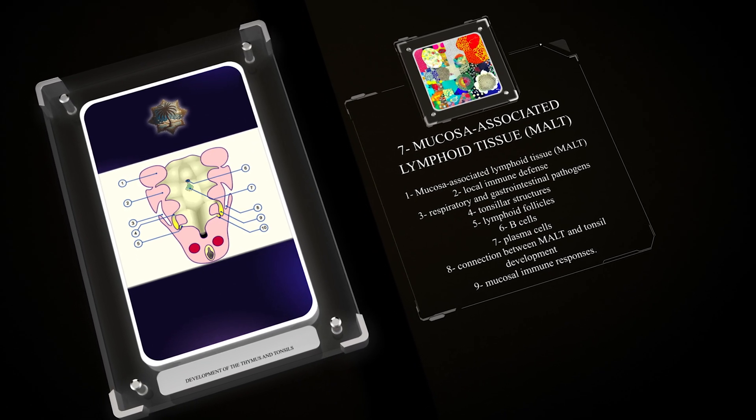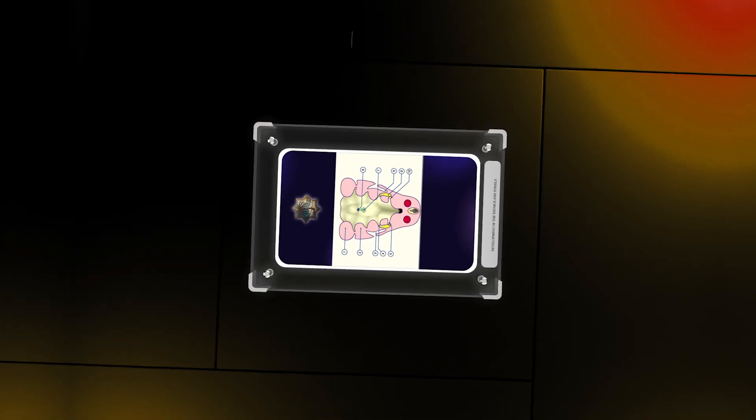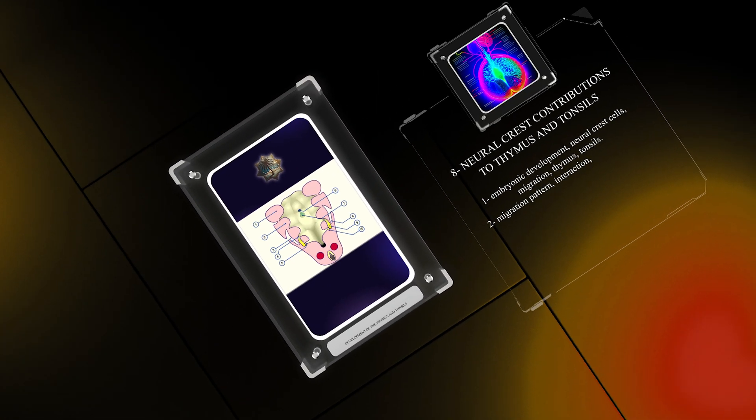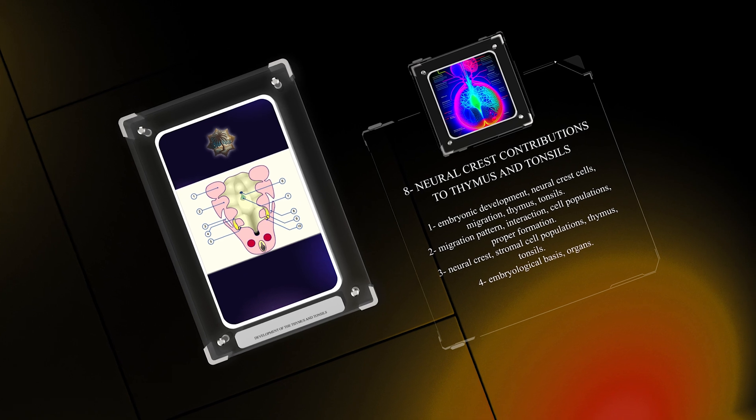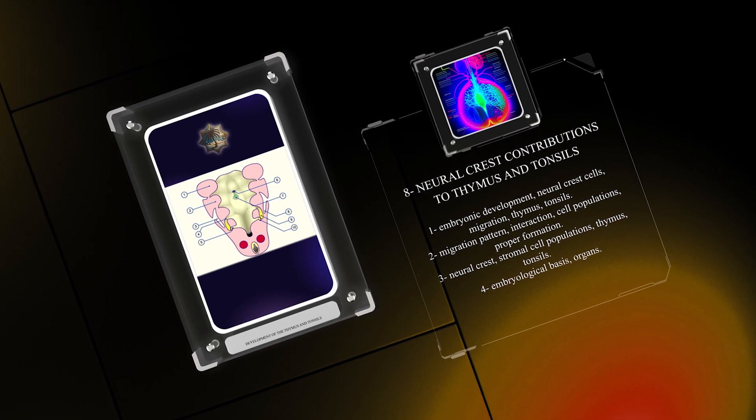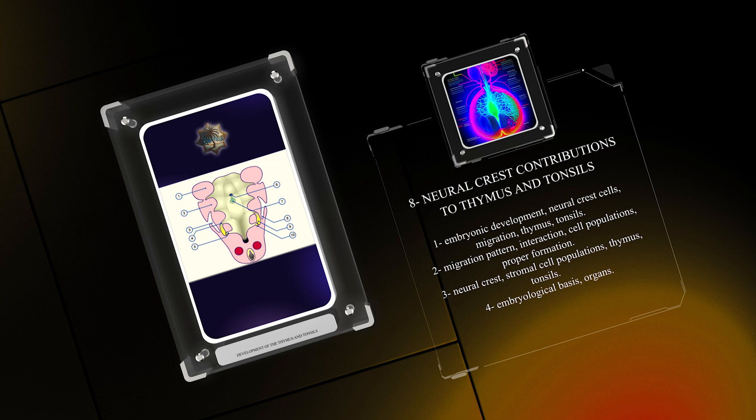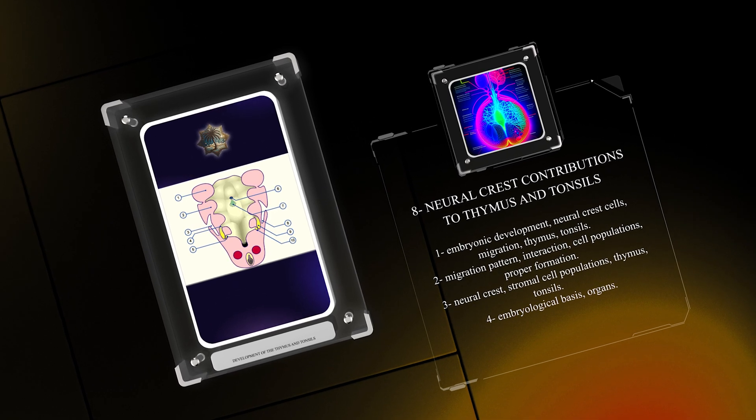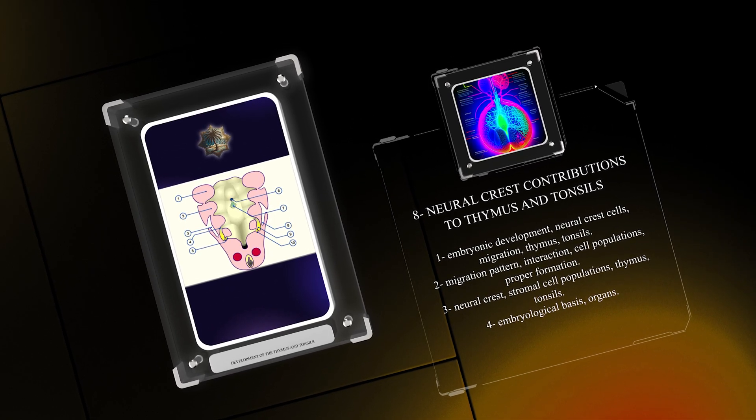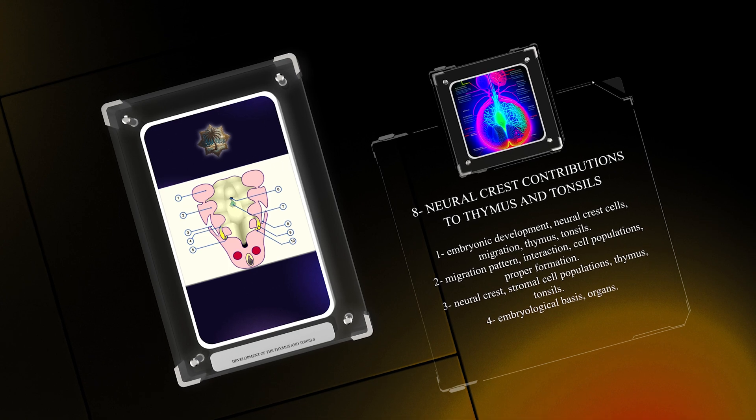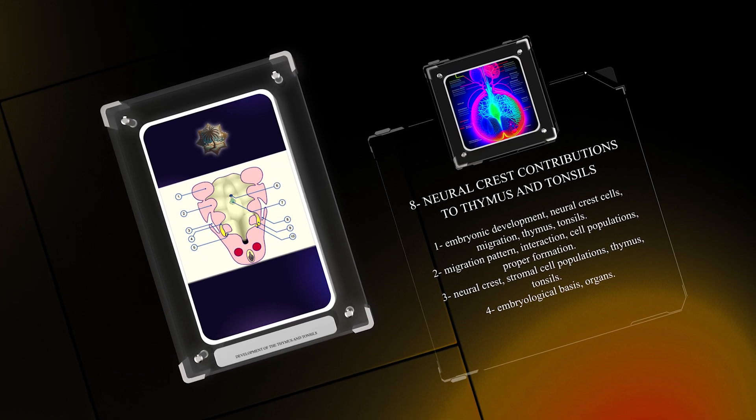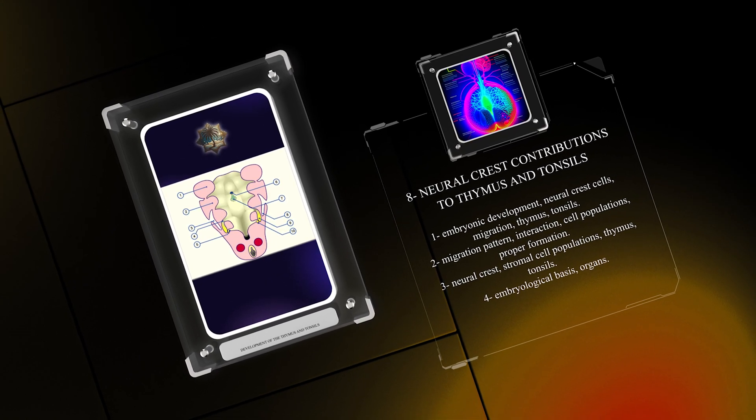During embryonic development, neural crest cells migrate to the thymus and tonsils. Their migration pattern and interaction with other cell populations within these organs are vital for their proper formation. The neural crest contributes significantly to the stromal cell populations within the thymus and tonsils. This understanding helps uncover the embryological basis of these organs.